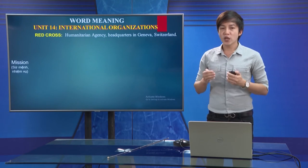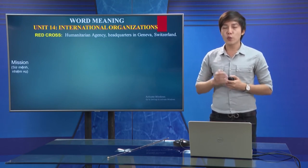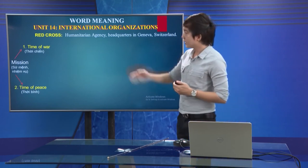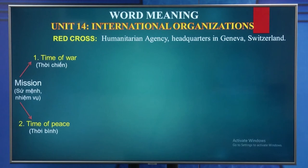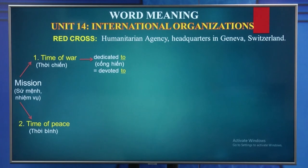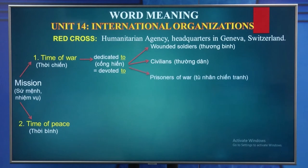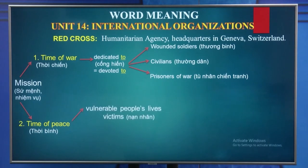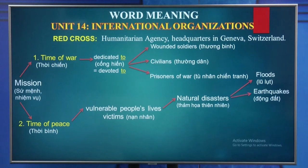The Red Cross has a lot of missions to do. We will focus on two different periods of time. The first one is time of war. The second is time of peace. In time of war, the Red Cross was dedicated to reducing the sufferings of soldiers, civilians, and prisoners of war. In time of peace, the Red Cross focuses on improving the lives of vulnerable people like the victims of natural disasters, such as floods, earthquakes, epidemics, and famines.